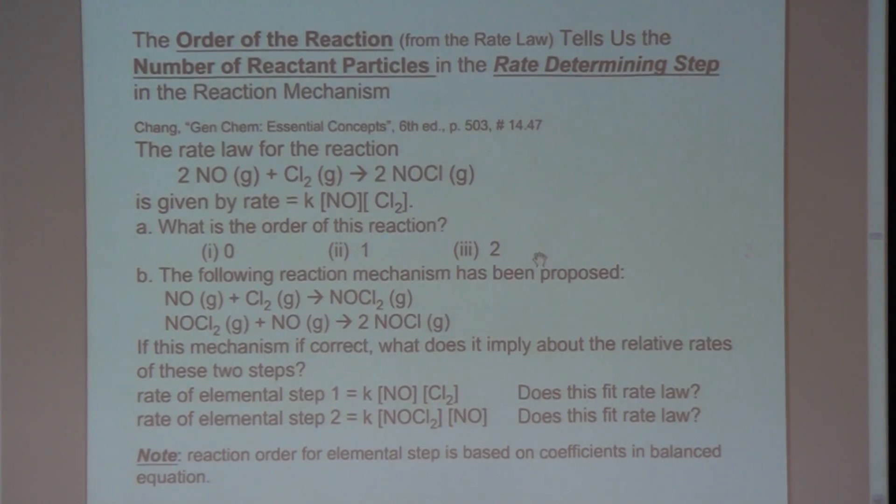The question says, if this reaction mechanism is correct, what does it imply about the relative rates of these two steps? In other words, is one step faster than the other one? Is this reaction faster than the second one or is it the other way around? So to answer that question, here's what I did. I wrote the rate law for each elemental step.